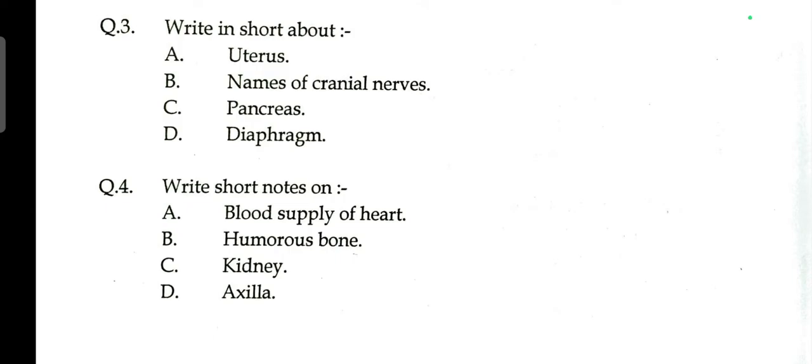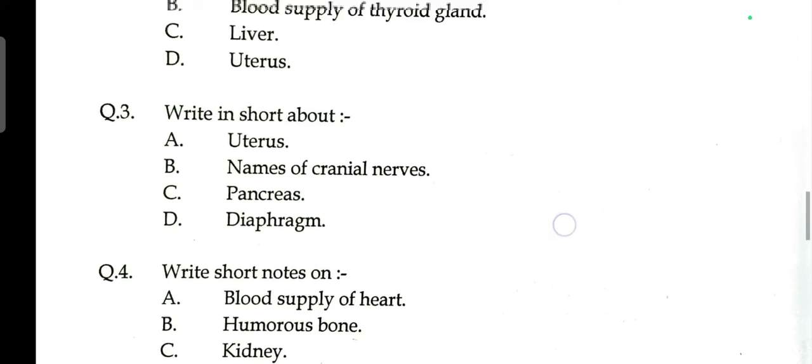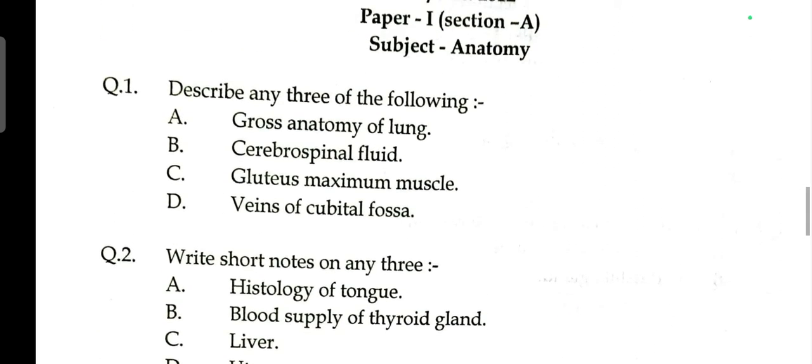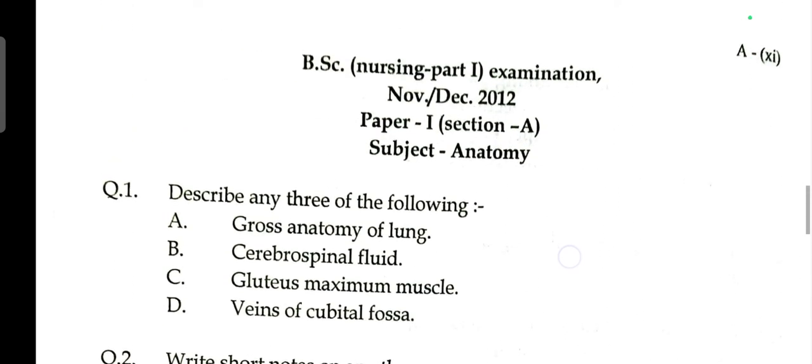Question number three: write in short about the uterus, names of cranial nerves, pancreas, and diaphragm. Question number four: write short notes on blood supply of the heart, humerus bone, kidney, and leg.